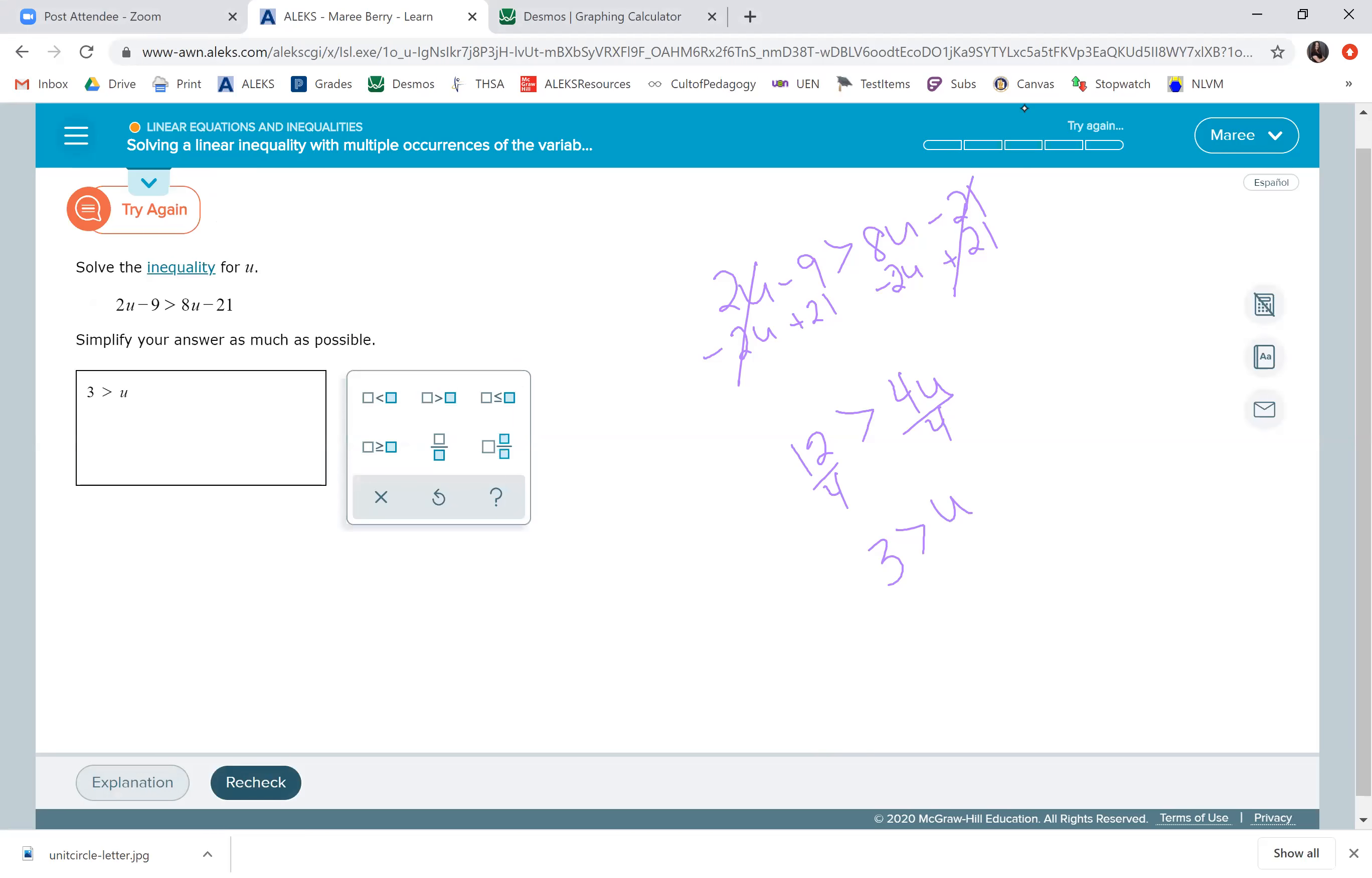Try again. Okay, so I subtracted 2U and I got 6U. Okay, so 8 minus 2 is 6. And 6 divided by 6... 12 divided by 6 is 2. So all I have to do is change this 3 to a 2. And that should work.